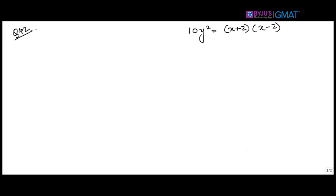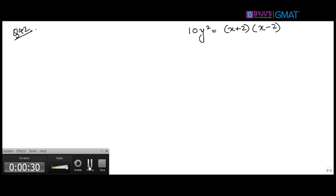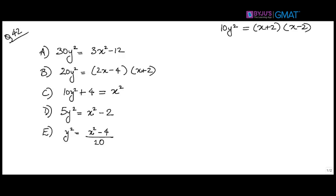We are not looking for an equivalent answer option — we are looking for 'not equivalent.' The conventional way would be to simplify the algebraic expression in each answer option and see which does not match, but you don't have so much time for that. So what would be an easier way?